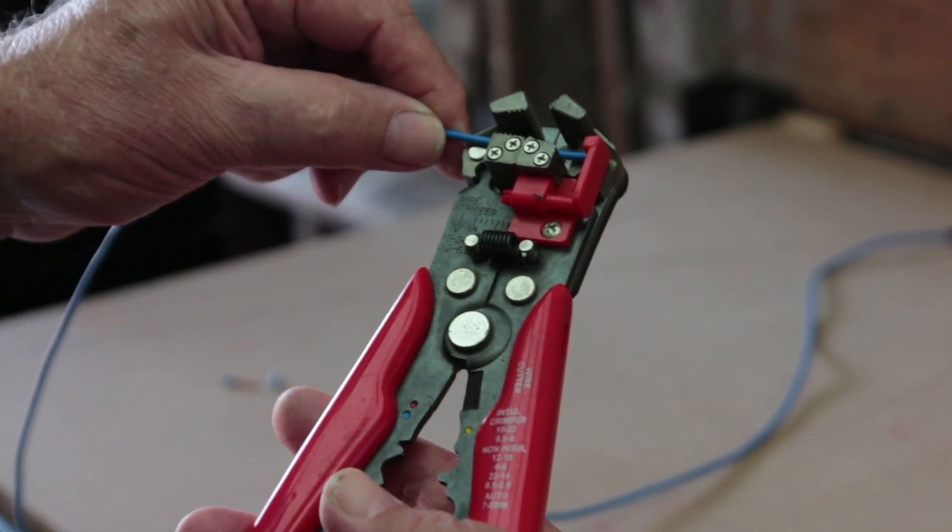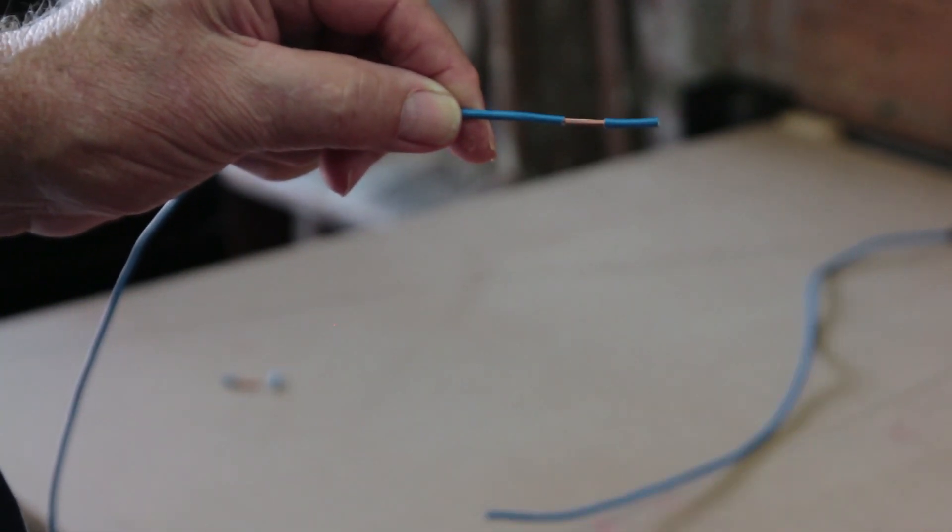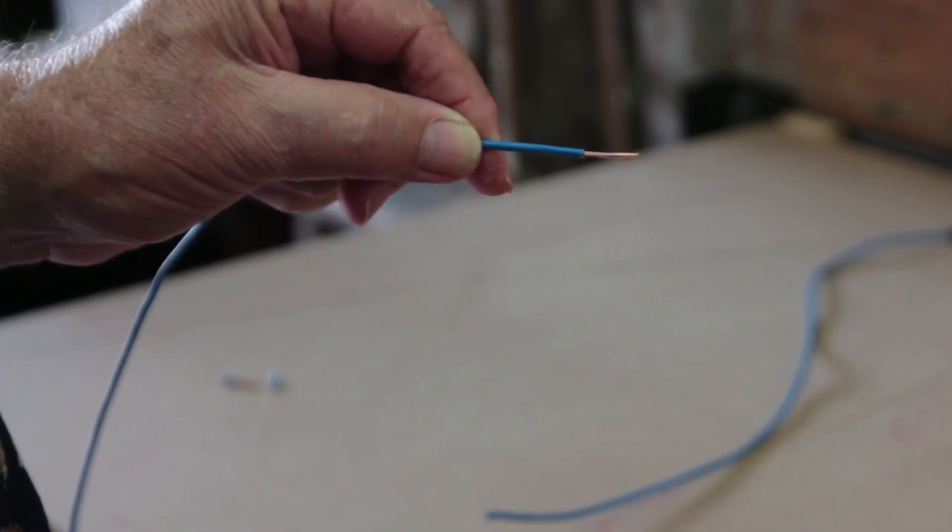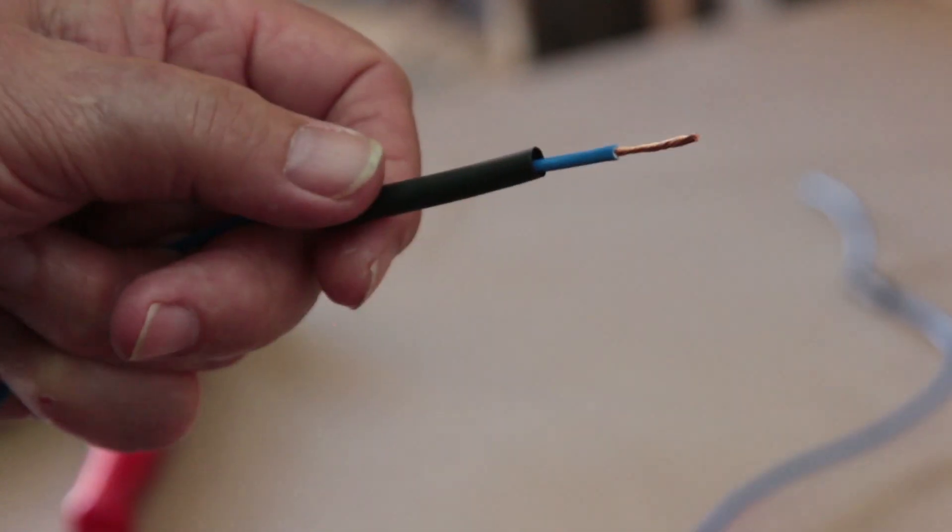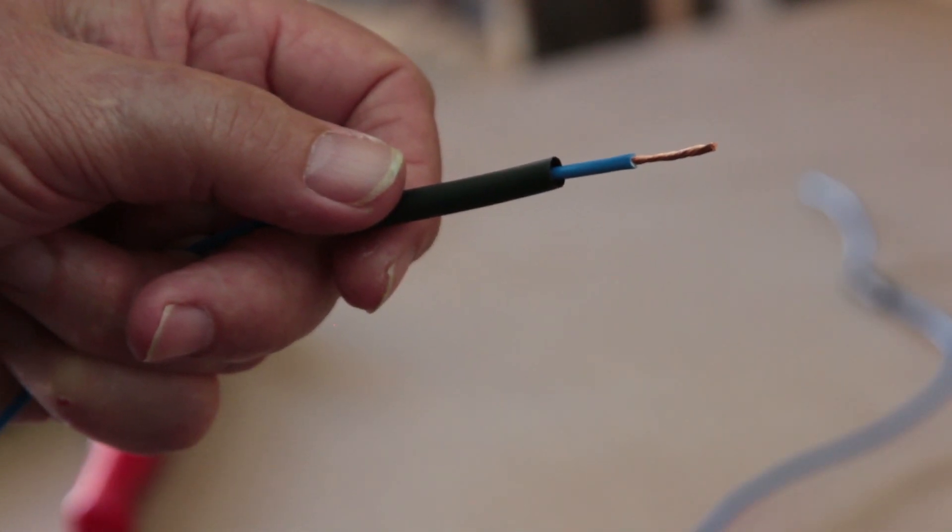To begin, strip off approximately one centimeter of insulation from the end of each wire to be joined, and slide a three centimeter piece of heat shrink over one piece of wire. Now these quick action wire strippers are a great and fast alternative to using side cutters or traditional wire strippers.